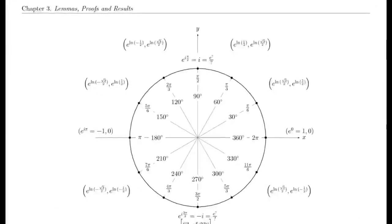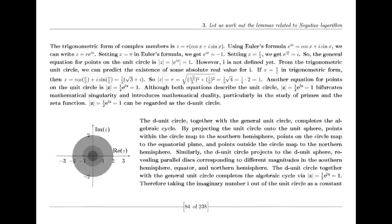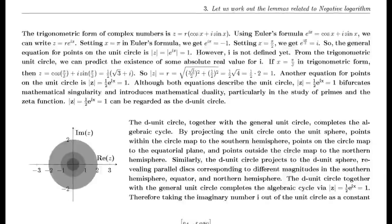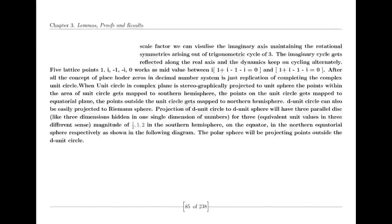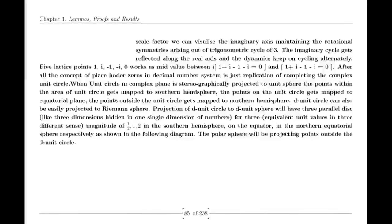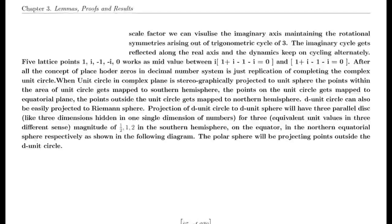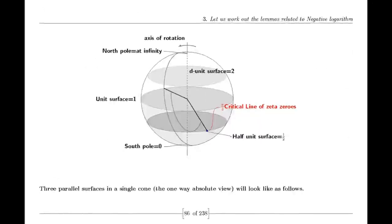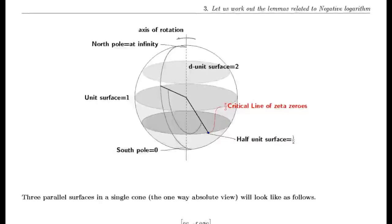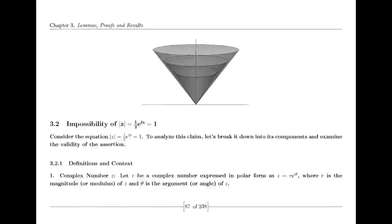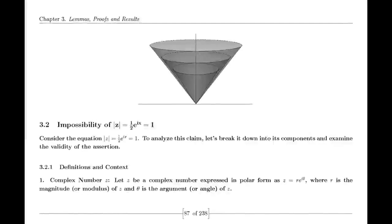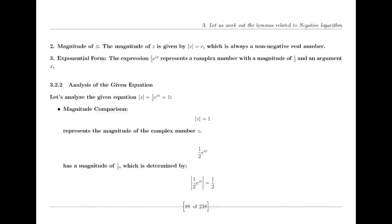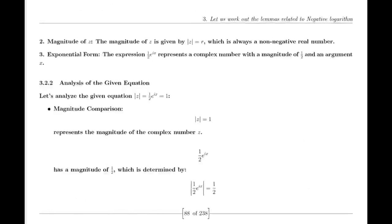You might have heard the story of the young Carl Friedrich Gauss, who when asked to sum the first 100 numbers gave the correct answer in just seconds. Remember this boy Gauss, who was playing with prime numbers and went on to come up with the prime number theorem (PNT). The theorem describes the asymptotic distribution of prime numbers and was a major milestone in number theory. Gauss's work laid the groundwork for many important mathematical discoveries, including the Riemann hypothesis.